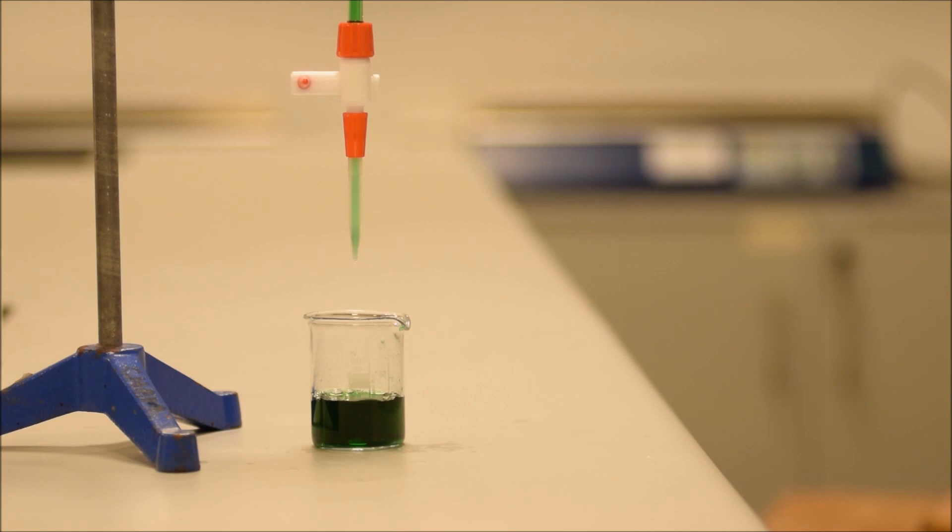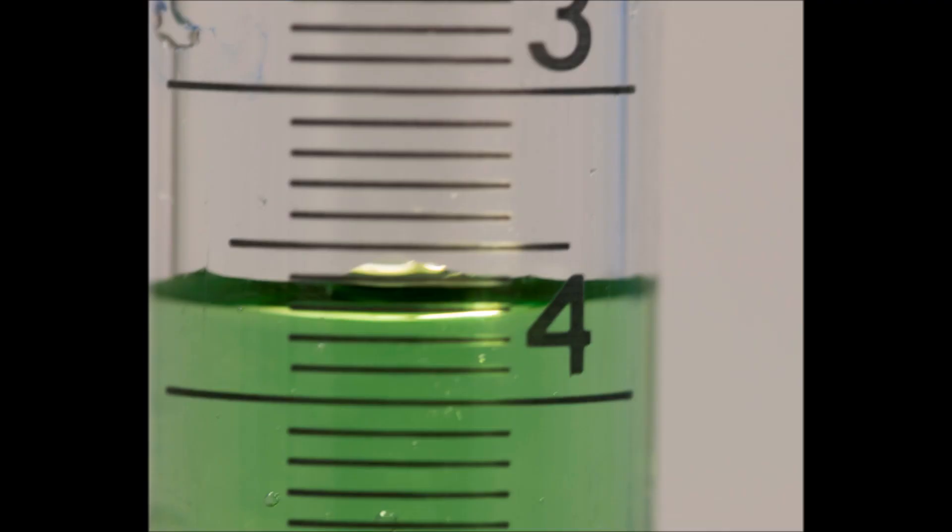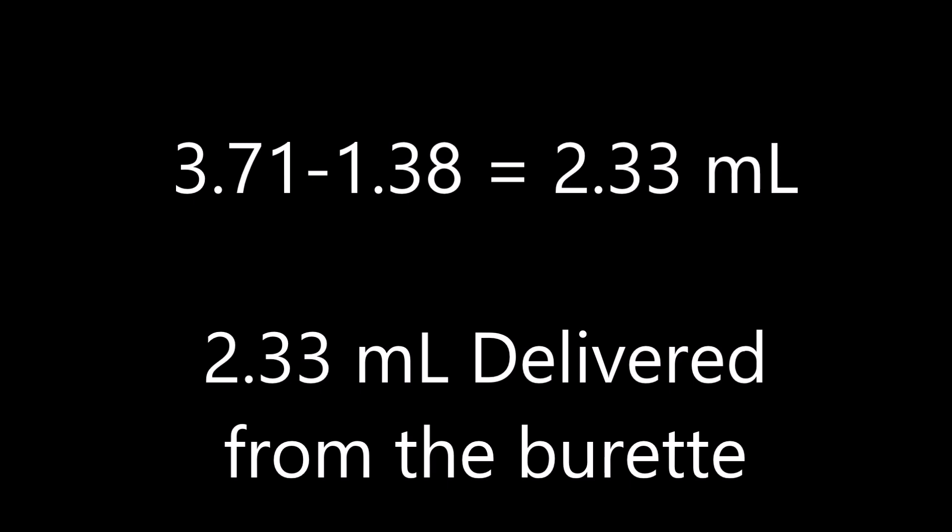So now, in our case, we can re-read the scale, and we can say it's now at 3.71 milliliters. If we take our initial reading away from our final reading, like so, we can see how much has actually come out of the burette. In this case, 2.33 milliliters.